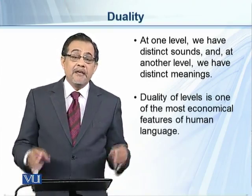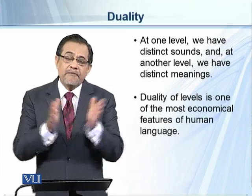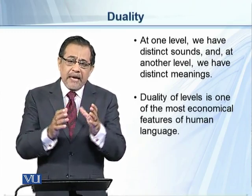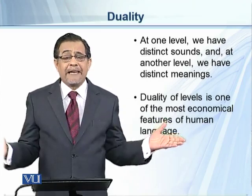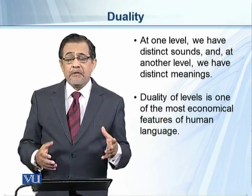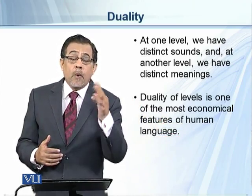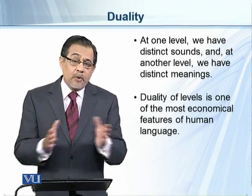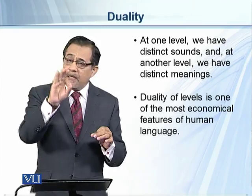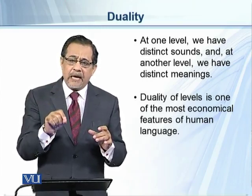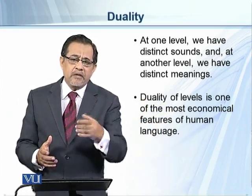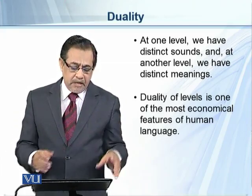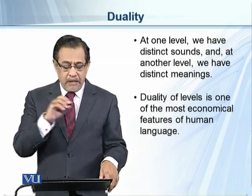Duality of levels is one of the most economical features of human language. With a very small number of sounds, we just form different groups and produce a lot of vocabulary. In English, there are more than one million words, and almost one thousand words are added every year. With just 44 sounds in RP or BBC dialect, we make a vast number of words. This is one of the very economical features of human language.